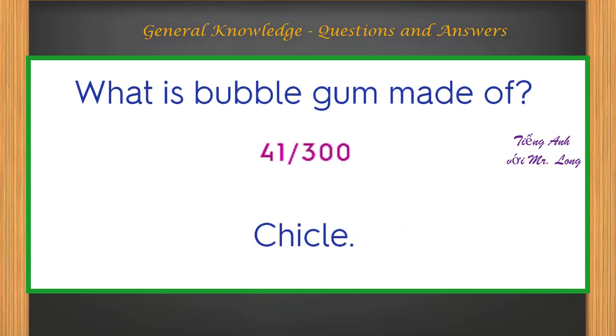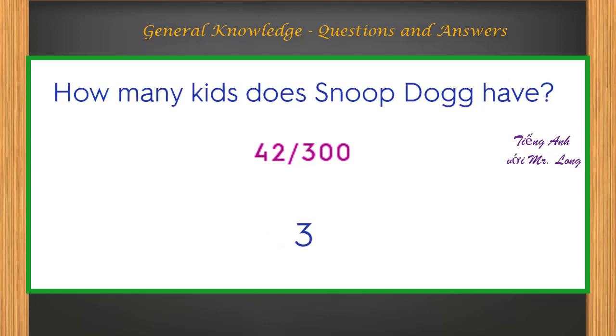What is bubble gum made of? Chicle. How many kids does Snoop Dogg have? Three.